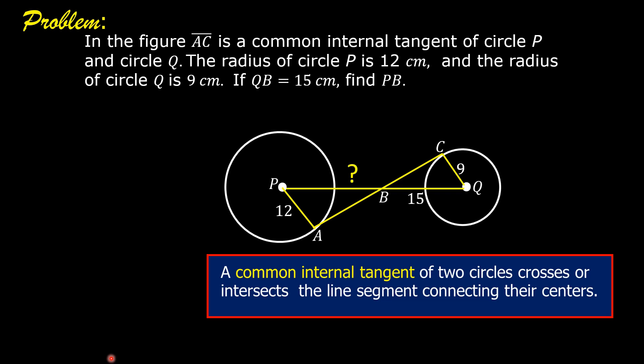We are asked to solve for PB. Segment AC is a common internal tangent of the two circles. Therefore, it is perpendicular to radius AP of circle P at point A, and angle PAB is a right angle.